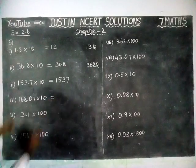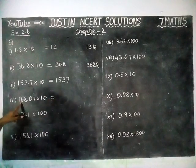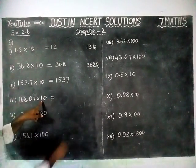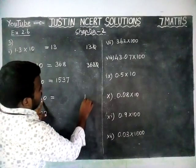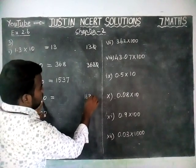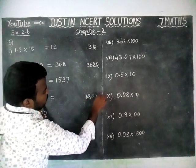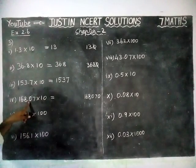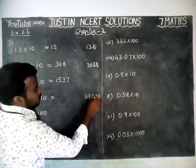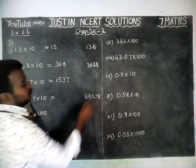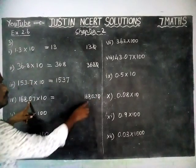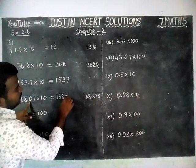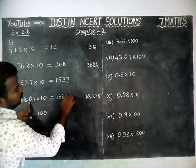Now, 168.07 into 10. When we multiply 168.07 by 10, a zero will come. Here we have two decimal points, so when we move two decimal places from the right side, this zero will be cancelled. So the answer is 1680.7.